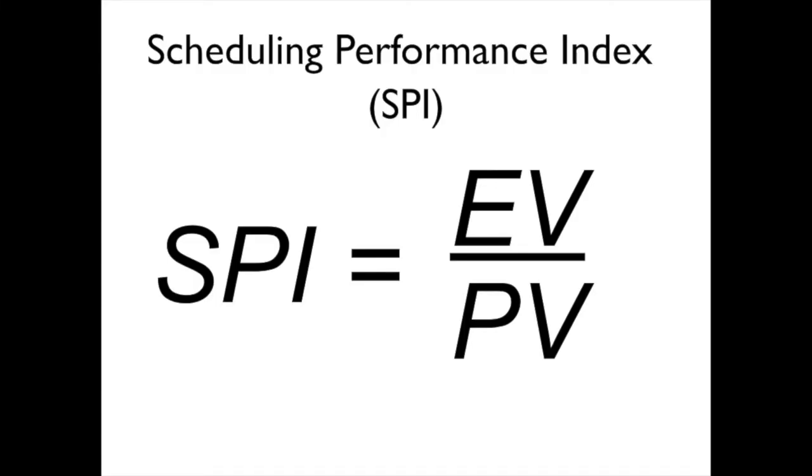SPI is calculated as the earned value divided by the planned value. However, I will mention that since we are going to be using money to measure time, in this case using our earned value metrics, which are expressed in terms of dollars, in order to measure our schedule, which is usually expressed in days, or weeks, or months...